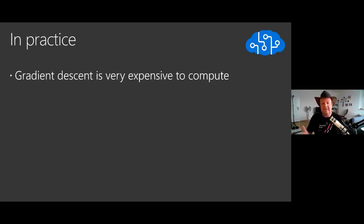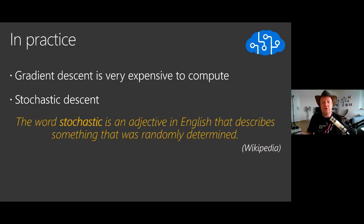Gradient descent, this is what it's called, is very expensive to compute. Data scientists talk about stochastic descent, another really cool word. If you check, actually stochastic just means random. So if somebody tells you, oh, I'm using stochastic descent, you say, well, you're just random and that's kind of what it says.